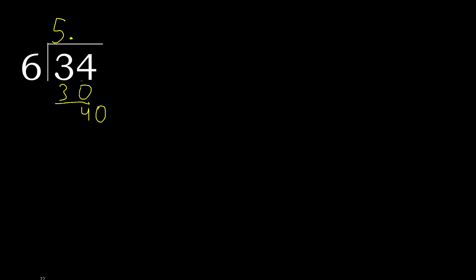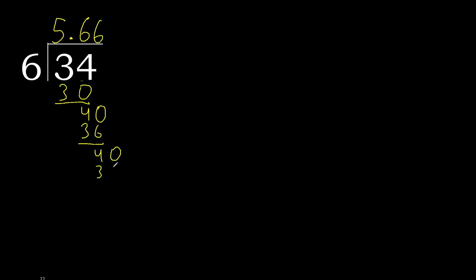40: 6 multiplied by 7 is 42 — is greater. 6 multiplied by 6 is 36. Subtract. Complete. Complete 0. Point is here. 6 multiplied by 6 is 36. Subtract. Complete.